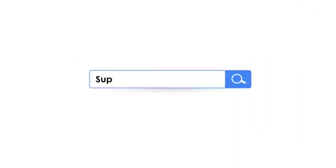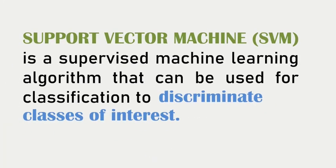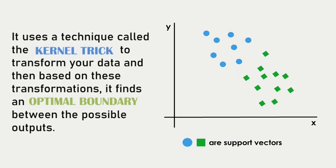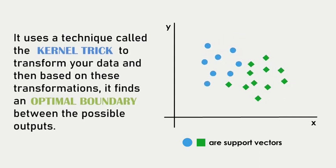But what is Support Vector Machine? Support Vector Machine is a supervised machine learning algorithm that can be used for classification to discriminate classes of interest. In this example, the SVM classifier separates the two classes by a defined hyperplane. It uses a technique called the kernel trick to transform your data, and then based on these transformations, it finds an optimal boundary between the possible outputs.